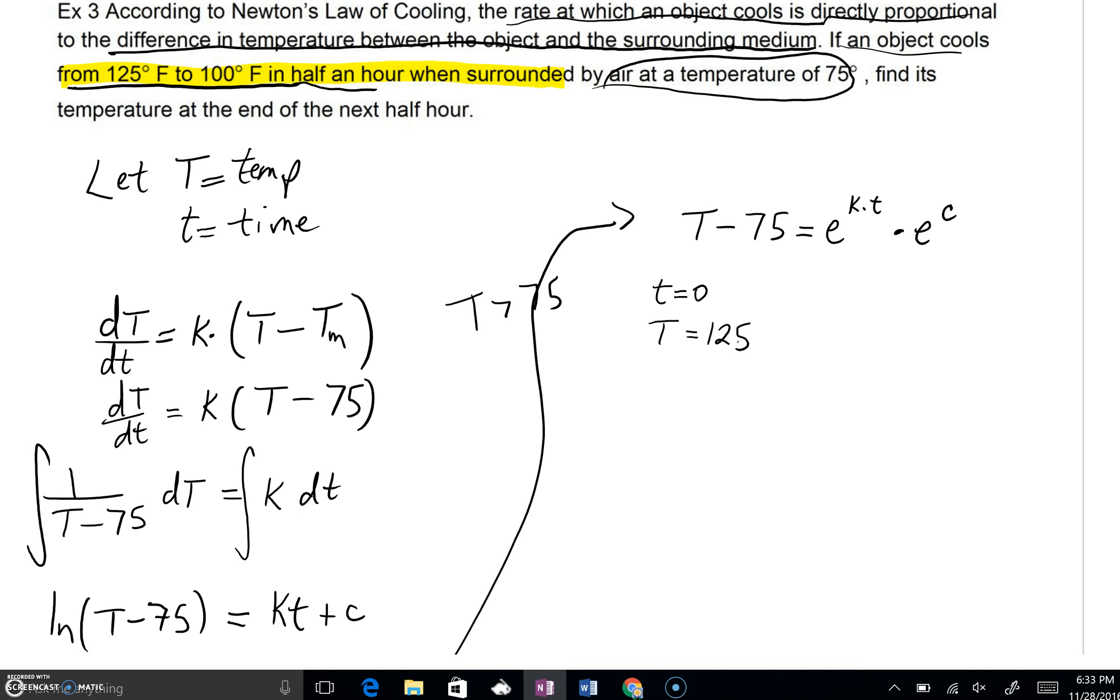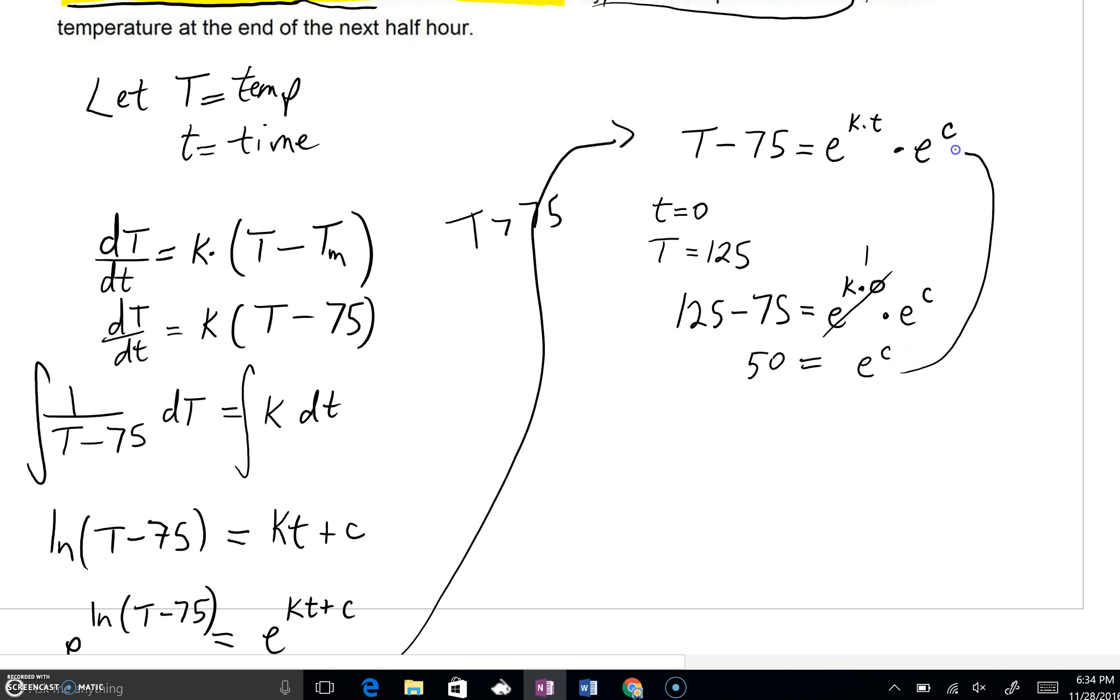We can plug this information into this equation. We'd get 125 minus 75 equals E to the K times zero times E to the C. And K times zero is zero. E to the zero is actually just a one. 125 minus 75 is actually a 50. And we'll have 50 is equal to E to the C. Now at this point, I do want to point out that we are so close to being done. What we've just done is we've found out what E to the C is.